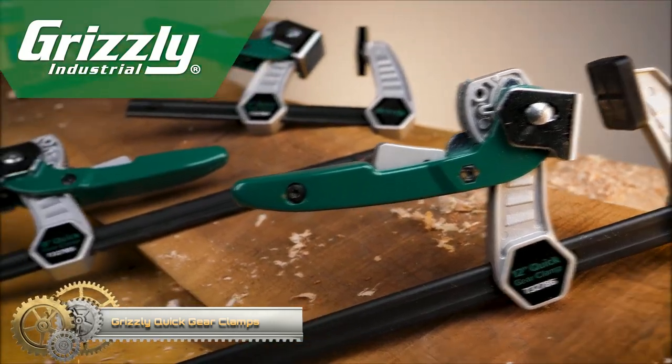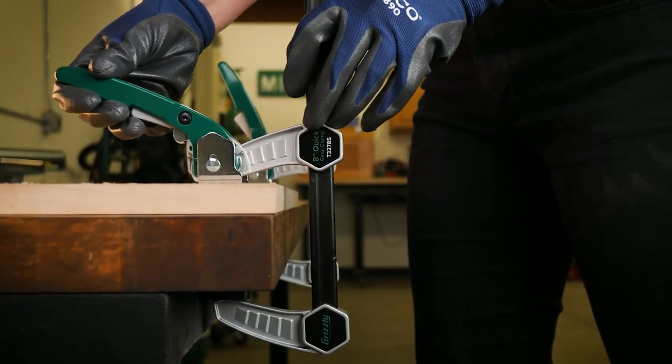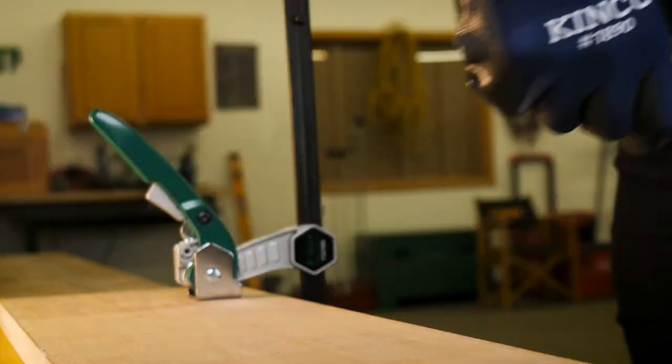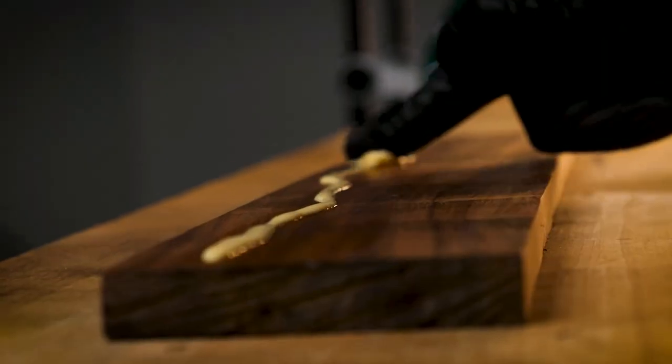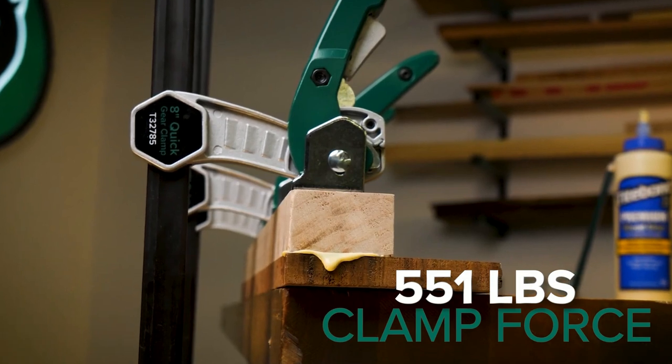Introducing the newest addition to the clamp collection, the Grizzly Quick Gear Clamps are designed with ease of use in mind. Just set the clamp in place, lock down the ratchet lever, and release the trigger. Lock up to 551 pounds of clamp force.